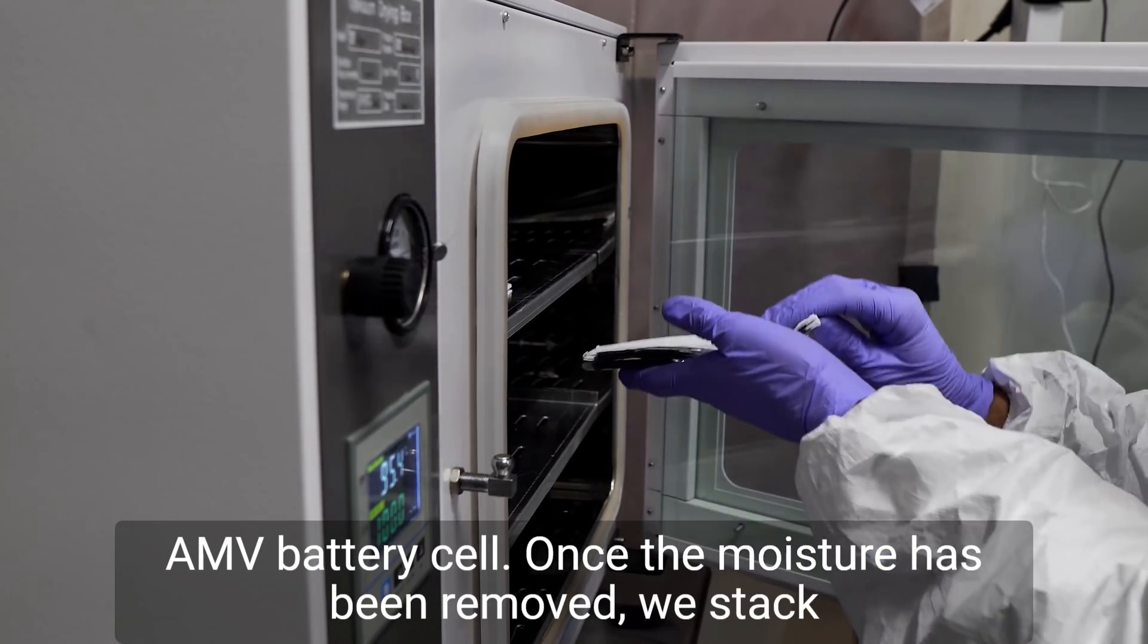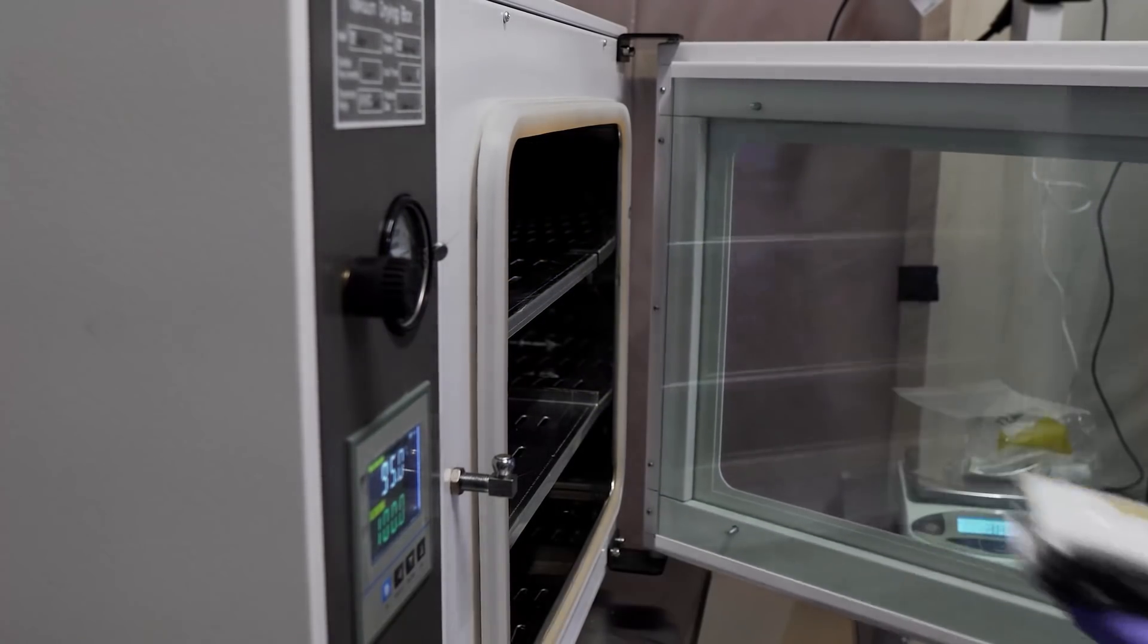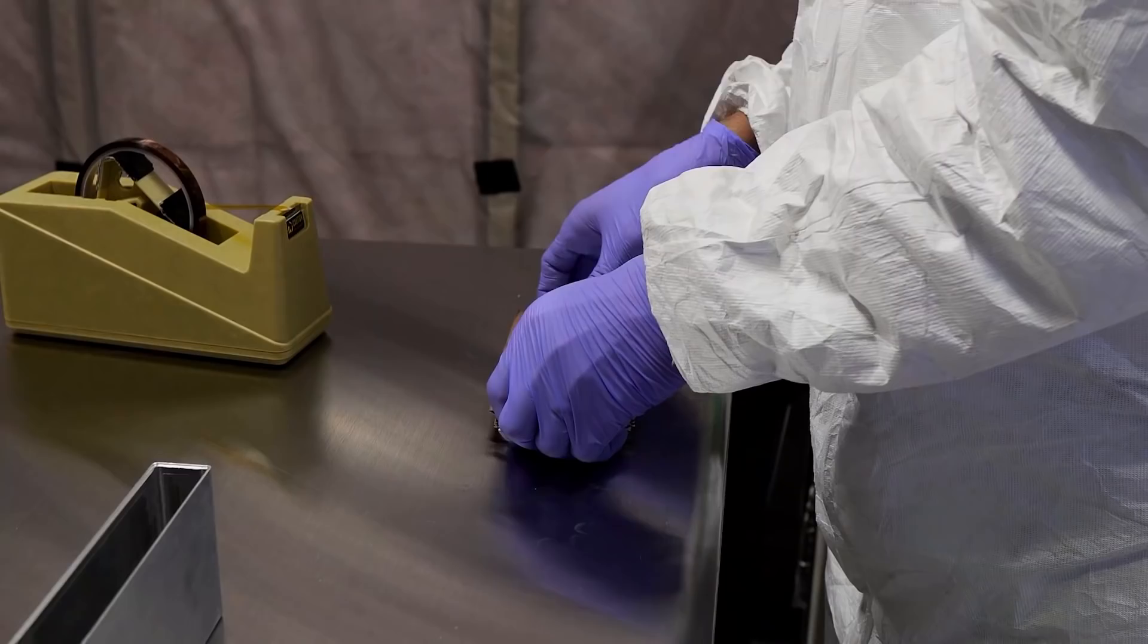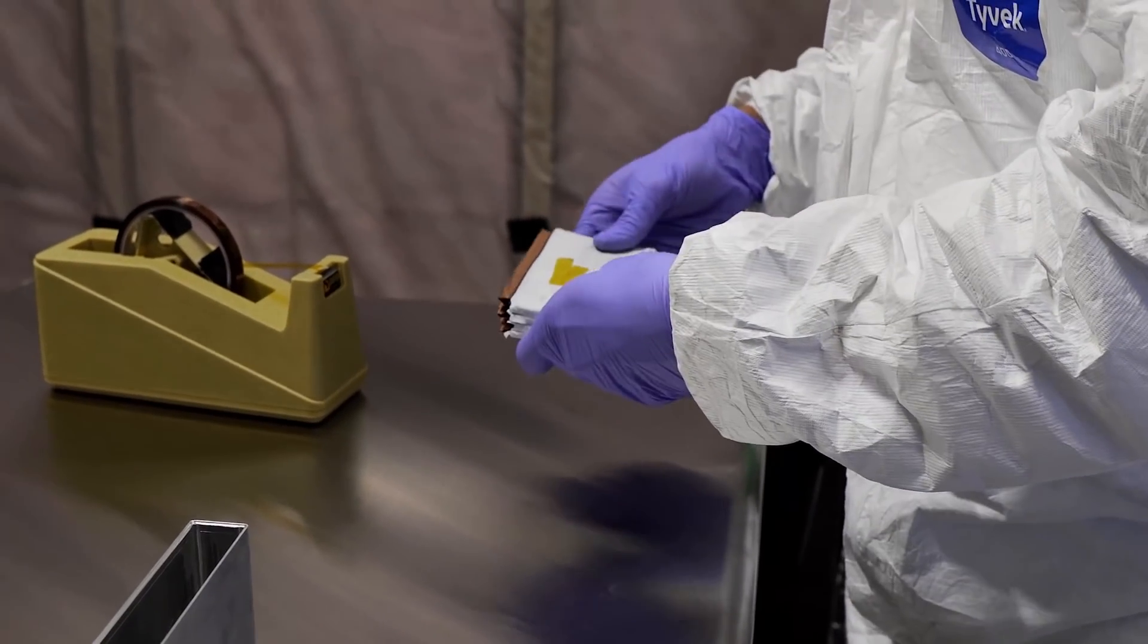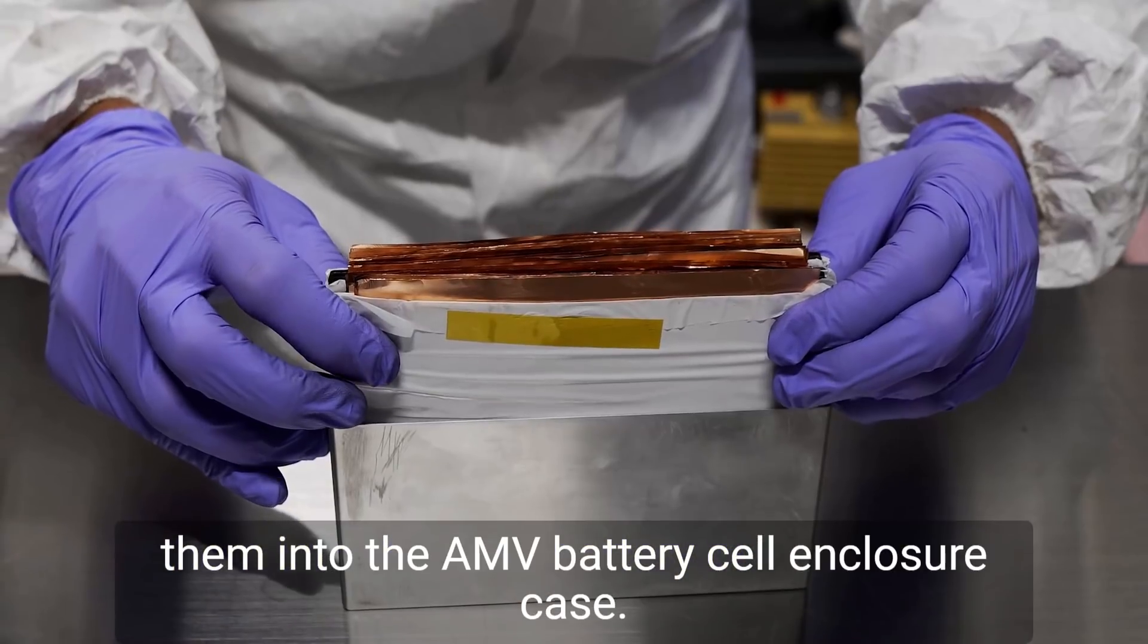Once the moisture has been removed, we stack four electrode jelly rolls together, and then we insert them into the AMV battery cell enclosure or case.